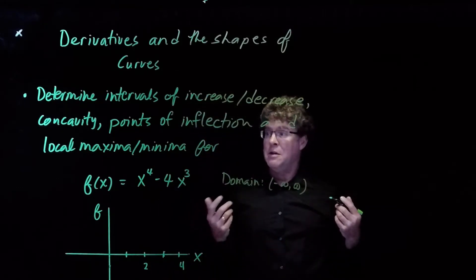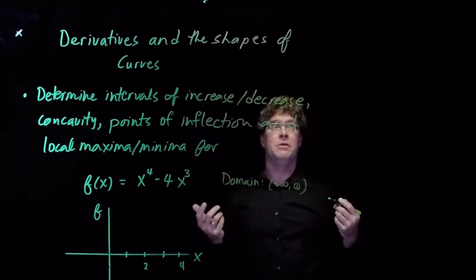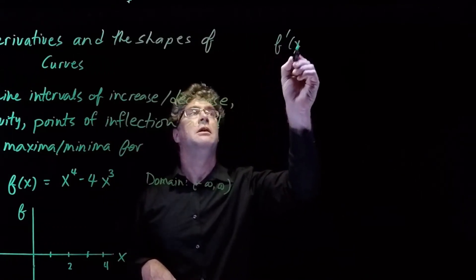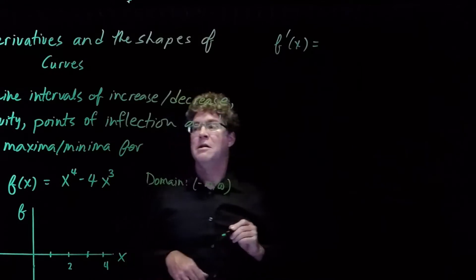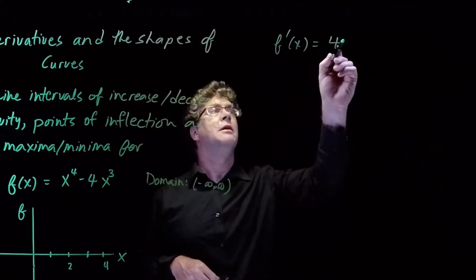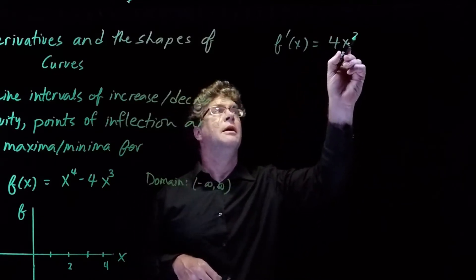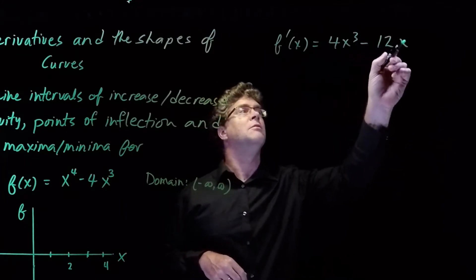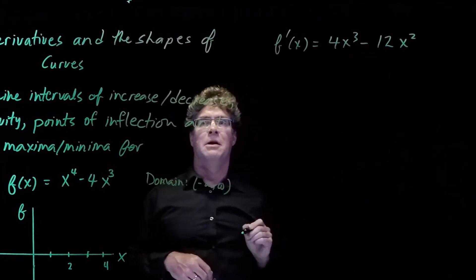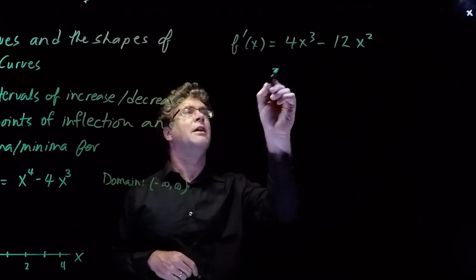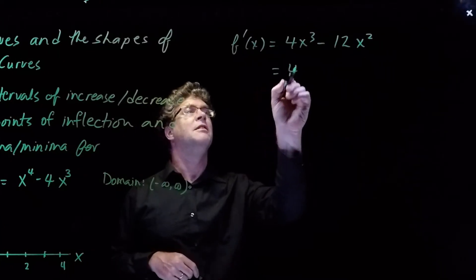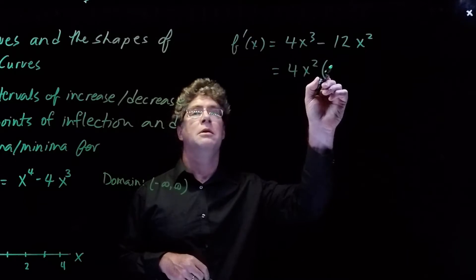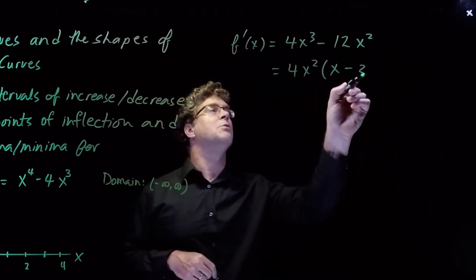The next thing we want to do is compute the derivative. The derivative f prime of x is 4x cubed minus 12x squared. And we can write that as 4x squared times (x minus 3).